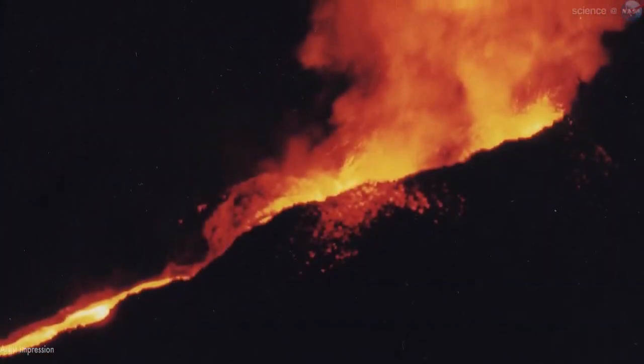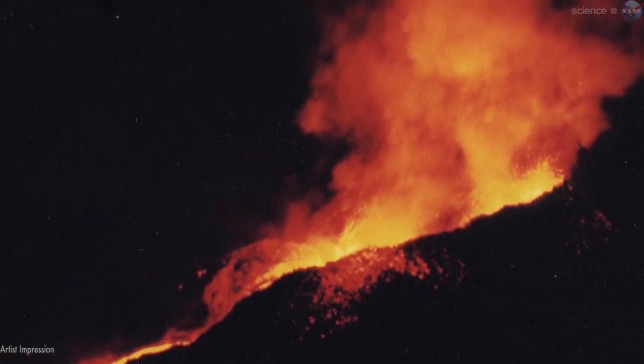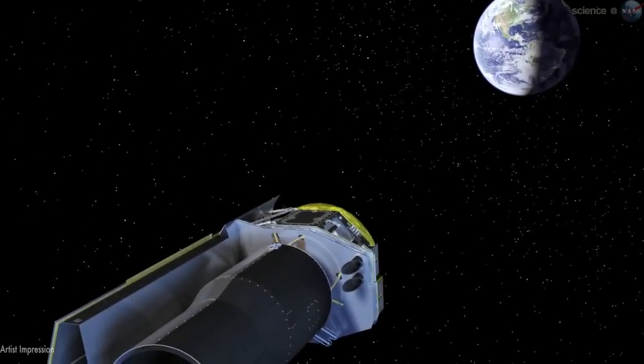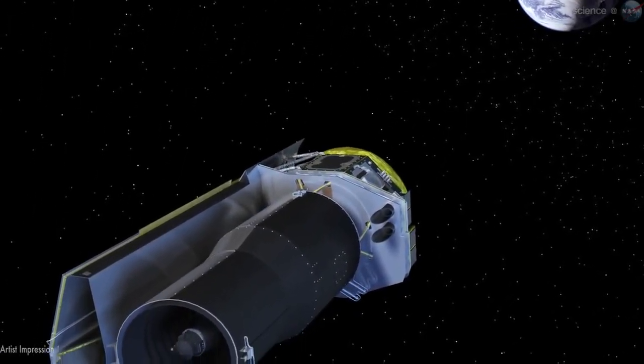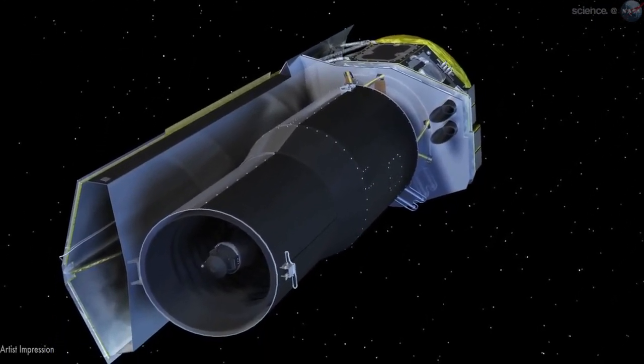Researchers have long thought that 55 Cancri e must be a wasteland of parched rock. Now they're thinking again. New observations by NASA's Spitzer Space Telescope suggest that 55 Cancri e may be wetter and weirder than anyone imagined.